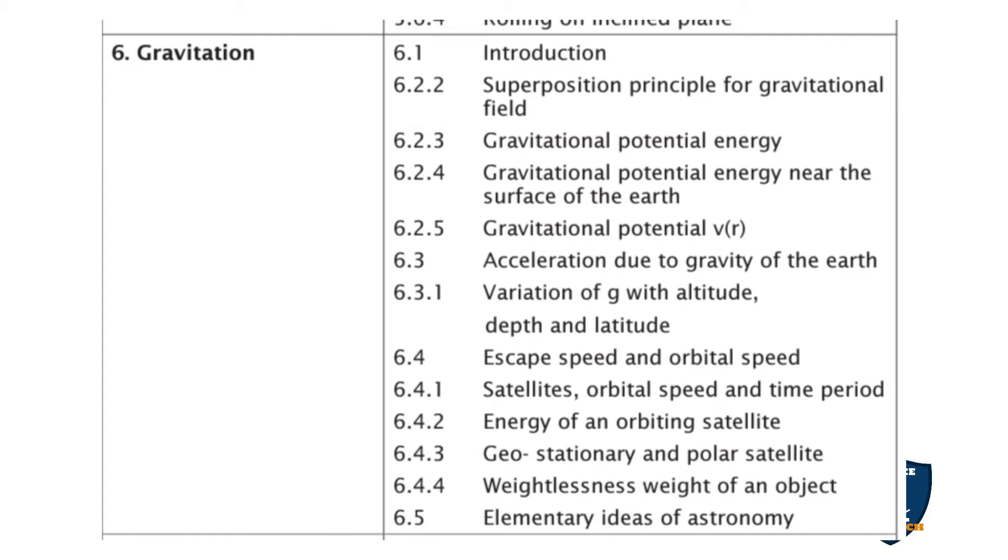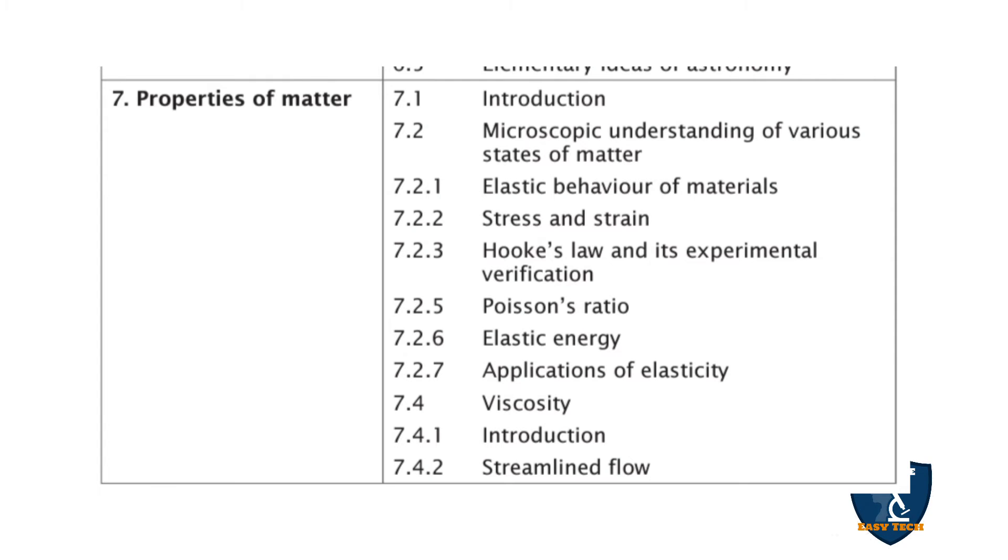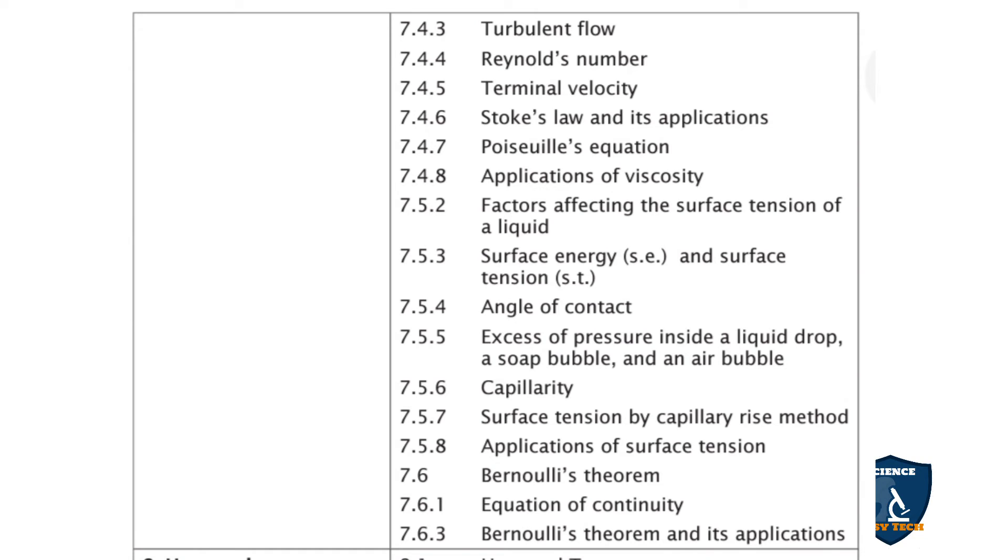Chapter 7: Properties of Matter. 7.1 Introduction, 7.2 Microscopic Understanding of Various States of Matter, 7.2.1 Elastic Behavior of Materials, 7.2.2 Stress and Strain, 7.2.3 Hooke's Law and Its Experimental Verification, 7.2.5 Poisson Ratio, 7.2.6 Elastic Energy, 7.2.7 Applications of Elasticity.